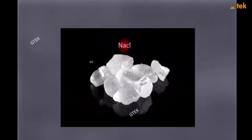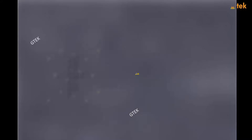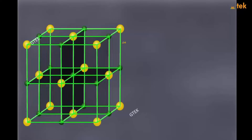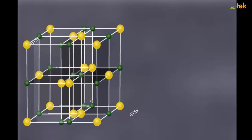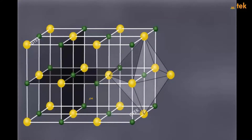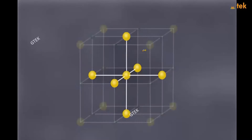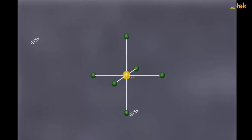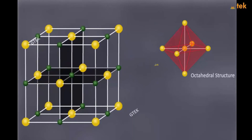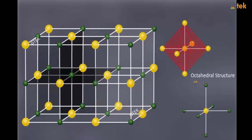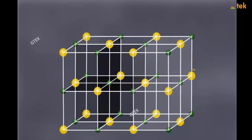Let's discuss sodium chloride. Sodium chloride is a white crystalline solid consisting of Na⁺ and Cl⁻ ions, visible as yellowish and greenish colors in the model. In this structure, one sodium ion is surrounded by chlorine ions and one chlorine ion is surrounded by sodium ions — it is an octahedral structure, not tetrahedral. This is the structure of sodium chloride.